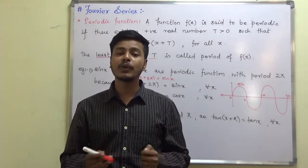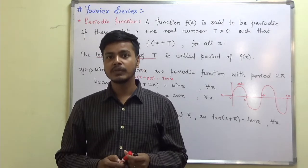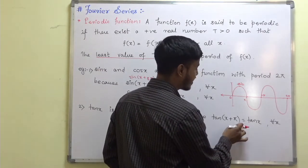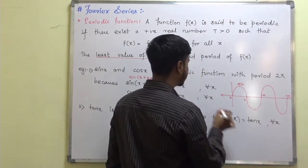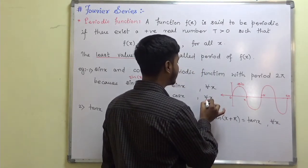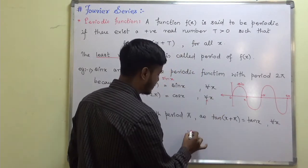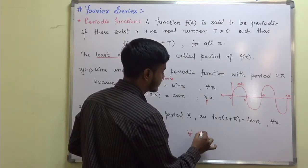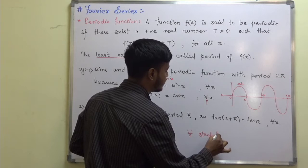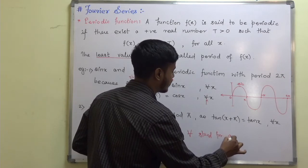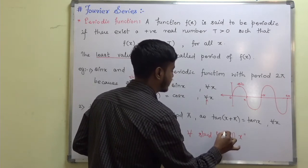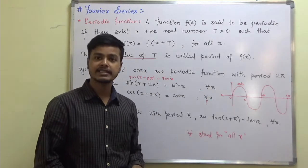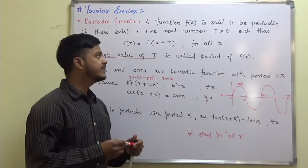Similarly, tan x is also a periodic function with period π. So tan(x + π) = tan x for all x. The symbol '∀' stands for 'for all x', or you can read it as 'for all values of x'.